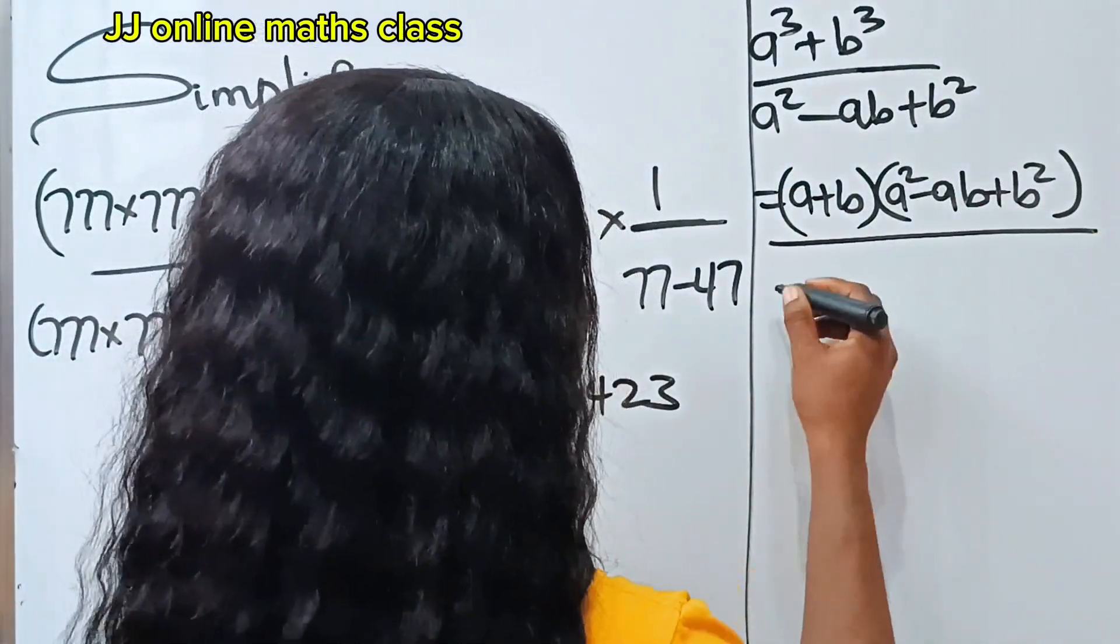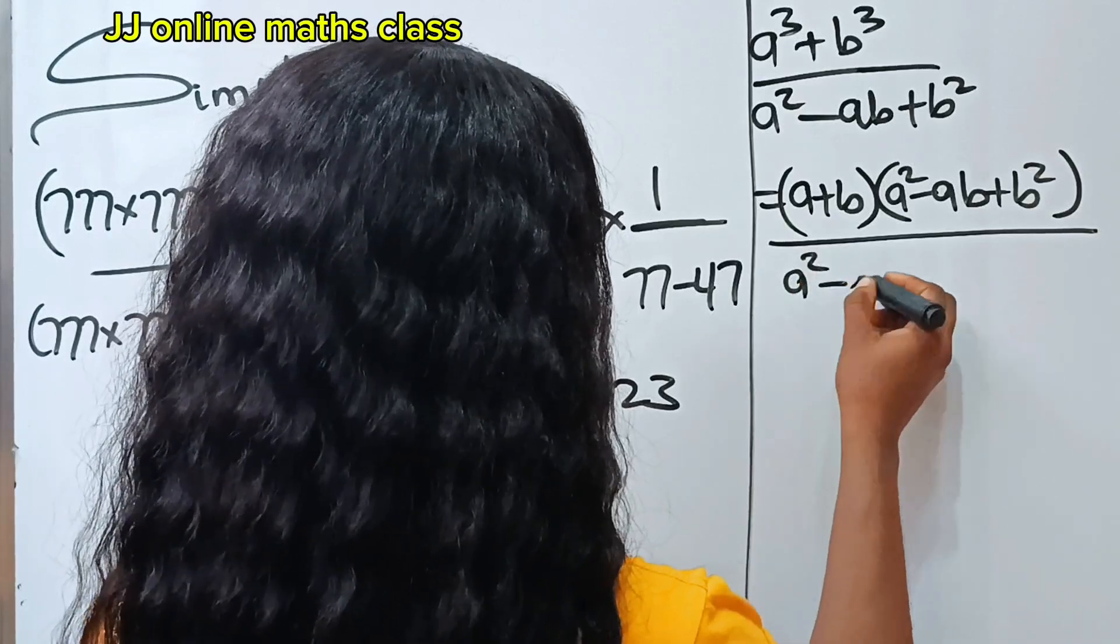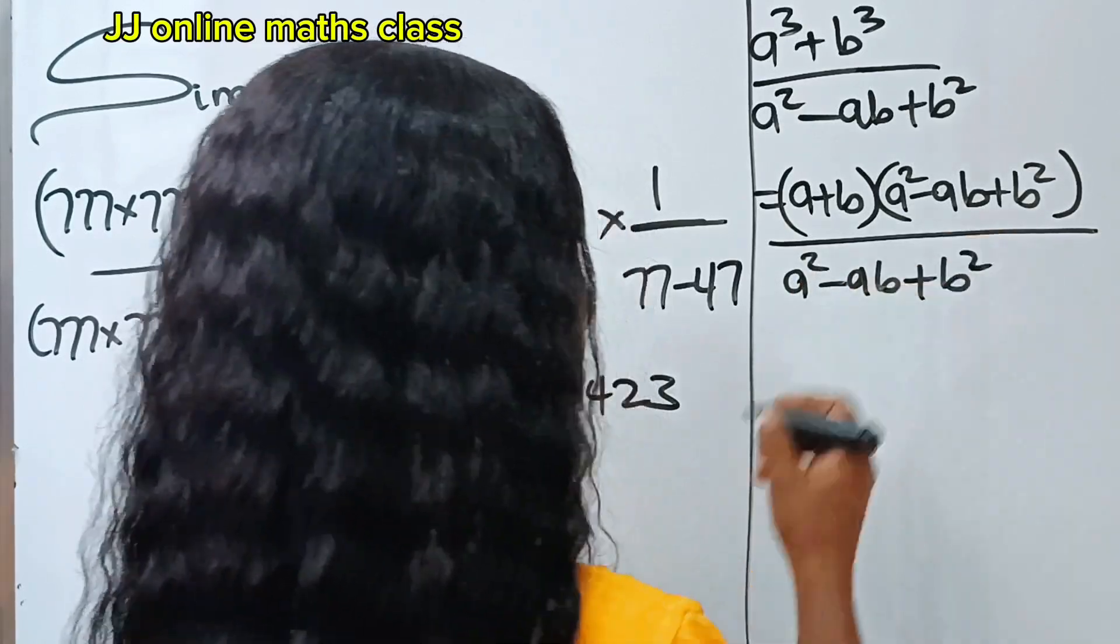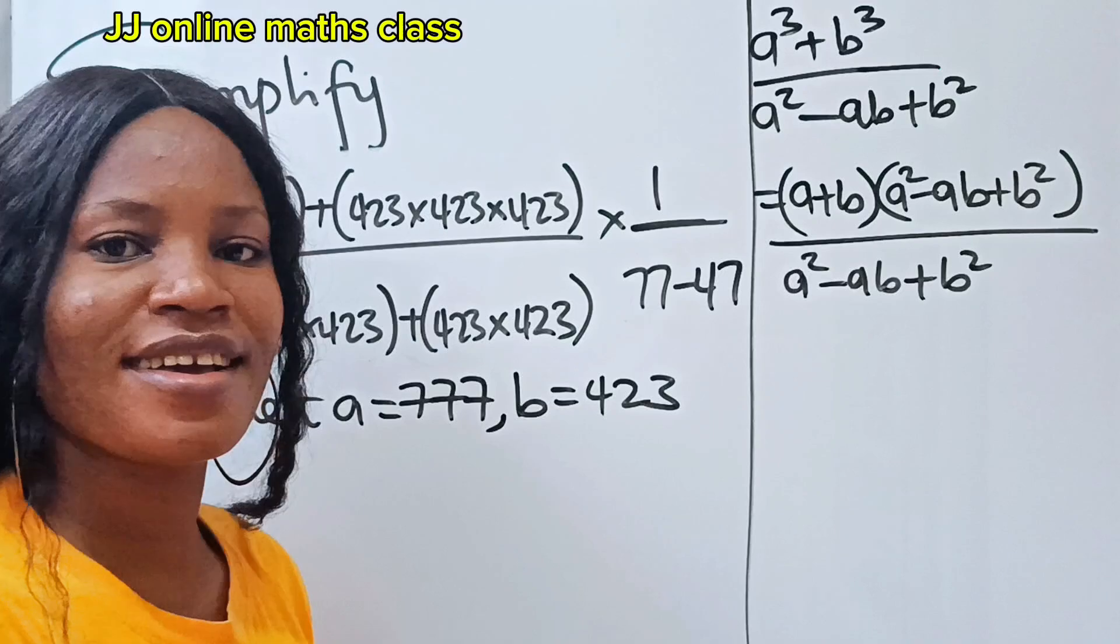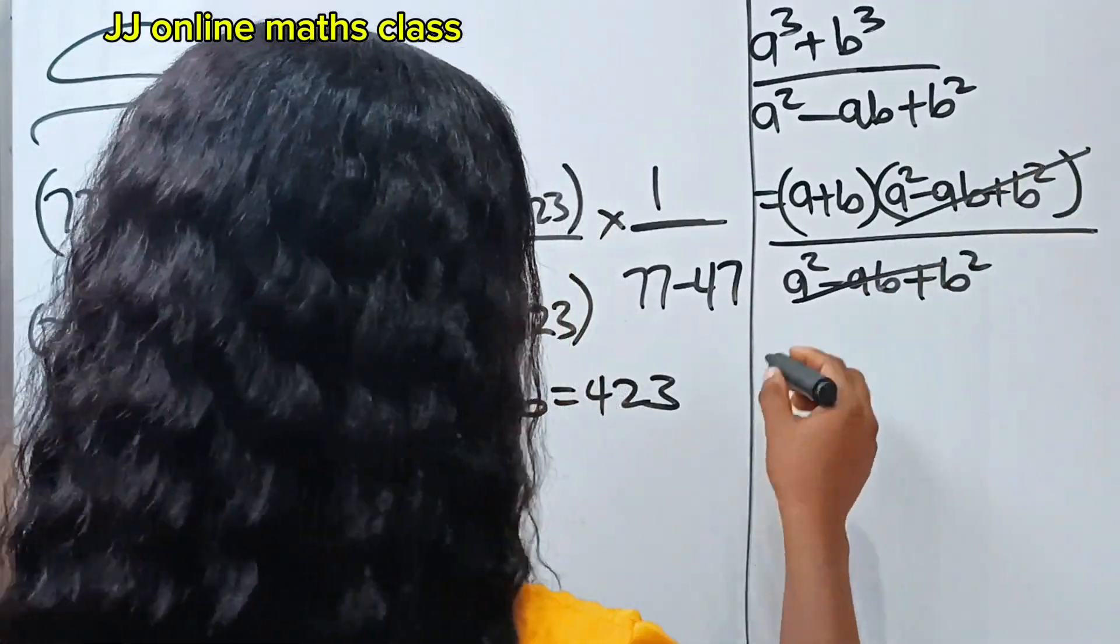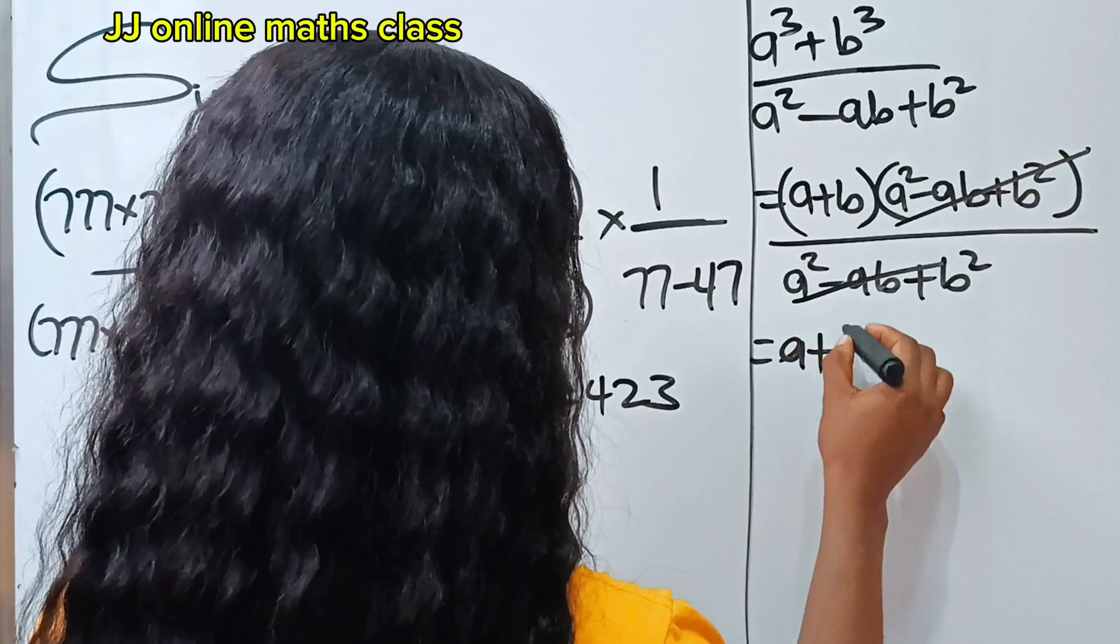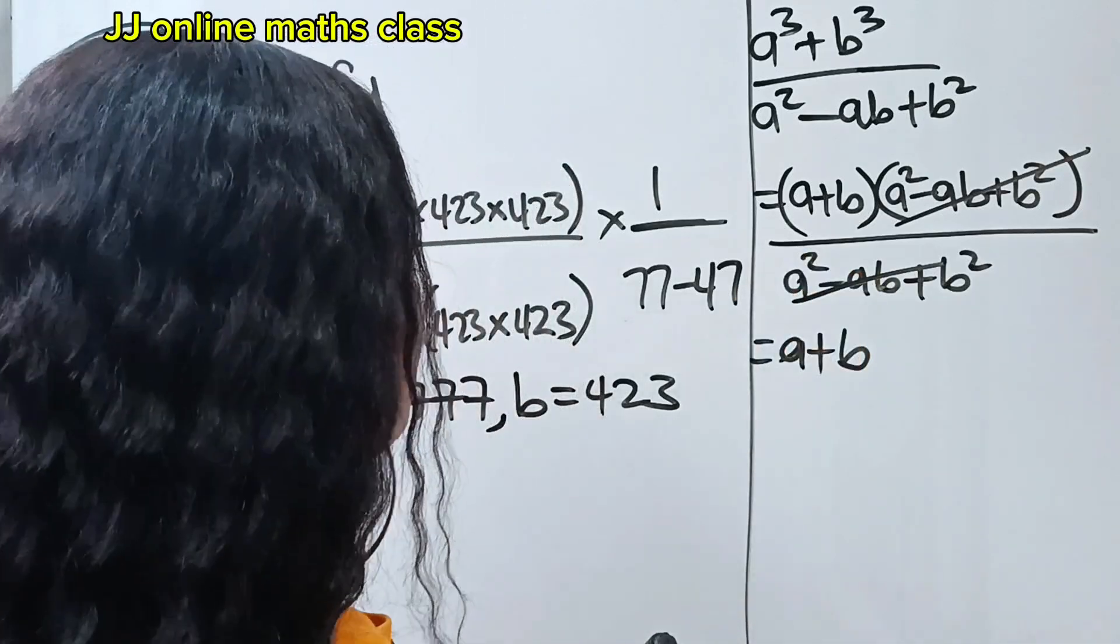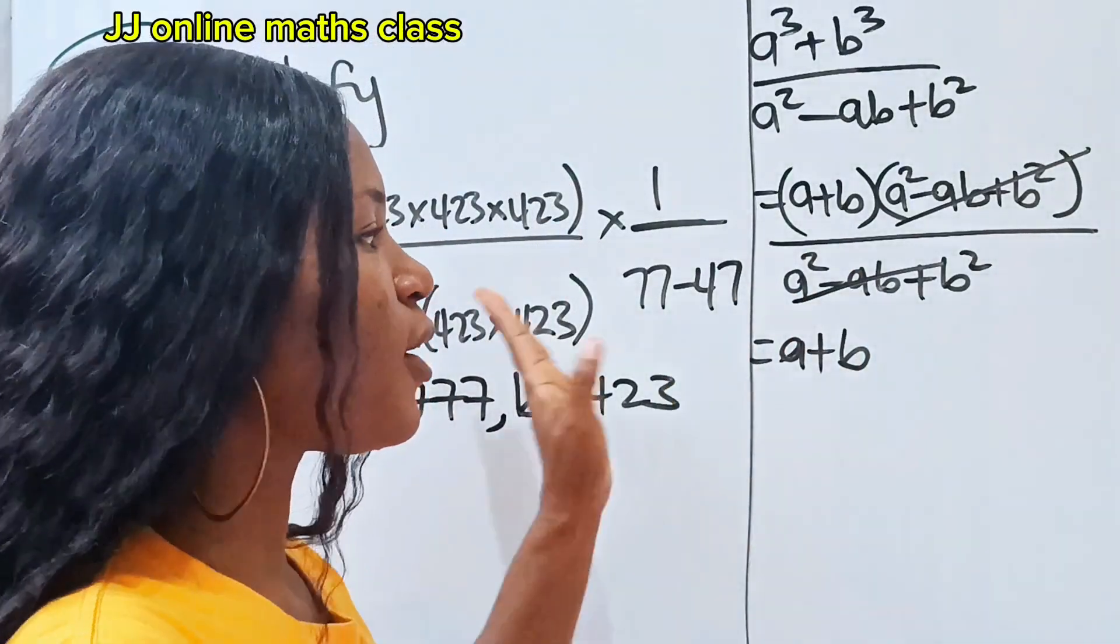So divided by a² minus ab plus b². Perfect. Now this will divide this, you are left with what? a plus b.